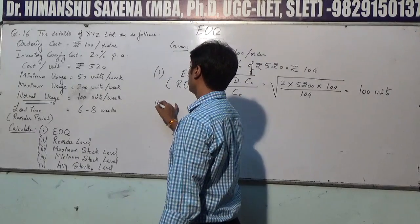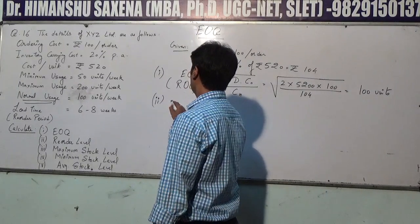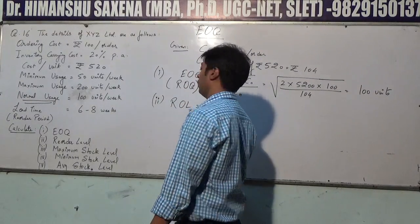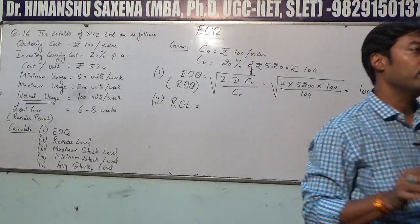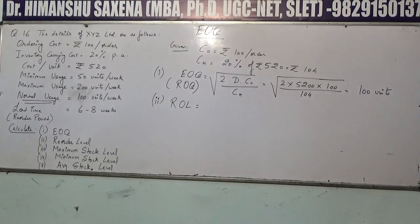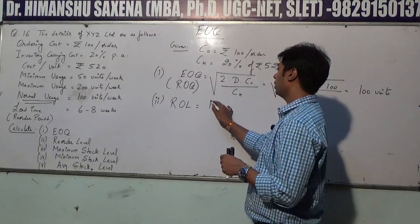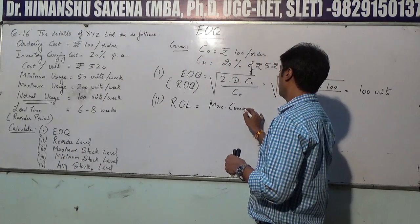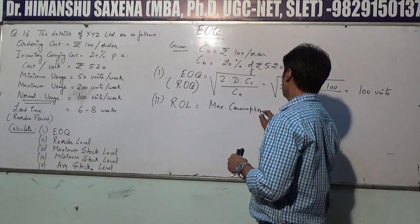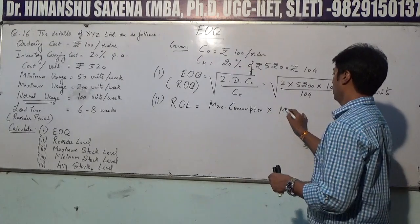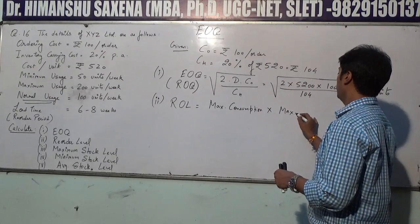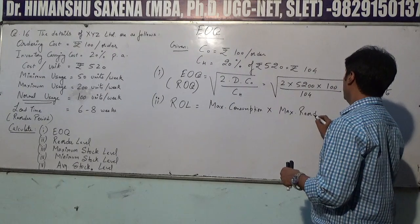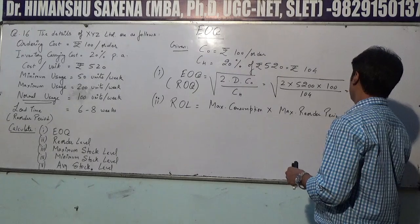The second part is the calculation of Reorder Level (ROL). The formula for Reorder Level is: Maximum Consumption × Maximum Reorder Period.